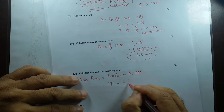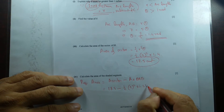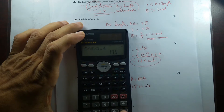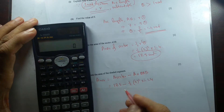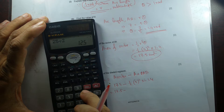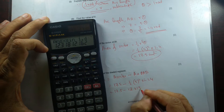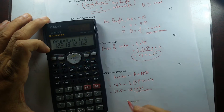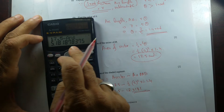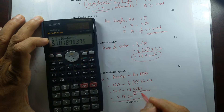The triangle area formula is half R squared sine theta. So we have 17.5 minus (25/2) × sin(1.4). Remember to set the calculator to radian mode. sin(1.4) gives approximately 12.3181, so the shaded area is approximately 5.1818 square centimeters.